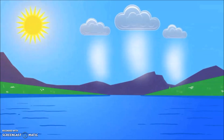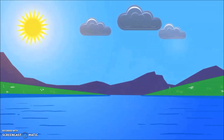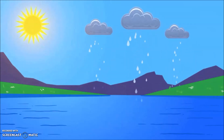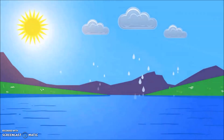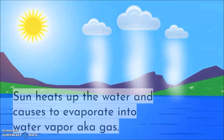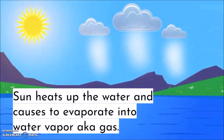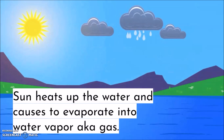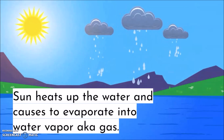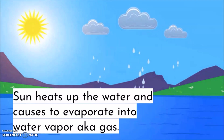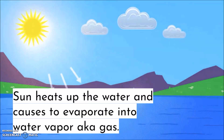This year we talked a lot about water — water in streams and rivers, groundwater, and now water in the air. Most of Earth's liquid water is in the ocean. The sun heats up the water and causes it to evaporate into water vapor, also known as the gas state of water.